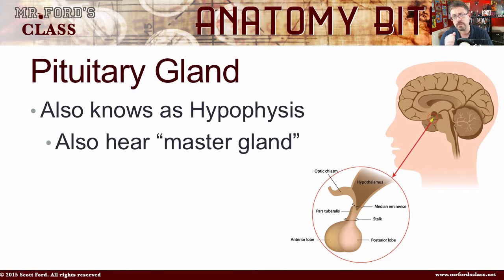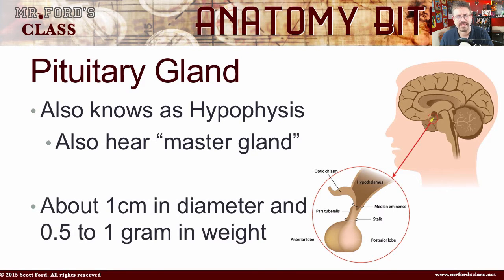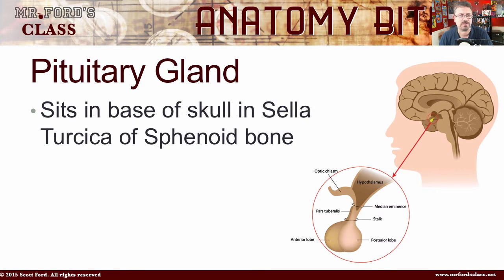Before we start talking about the growth hormone, we have to understand a little bit about where this thing's coming from. I have entire videos on the endocrine system, which you can see at Mr. Ford's Class on YouTube or go to mrfordsclass.net for the entire lecture series. But for right now, just understand that the growth hormone is coming from something called the pituitary gland. The pituitary gland — you might also hear it called the master gland — is about one centimeter in diameter and about 0.5 to 1 gram in weight. It sits at the base of the skull in something called the sella turcica, or Turkish saddle, of the sphenoid bone.